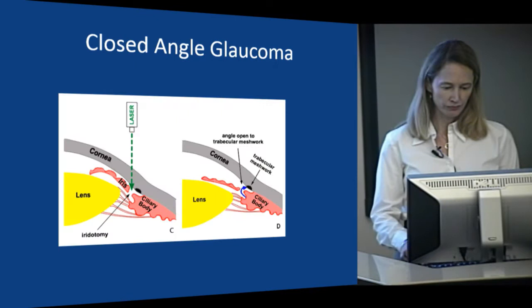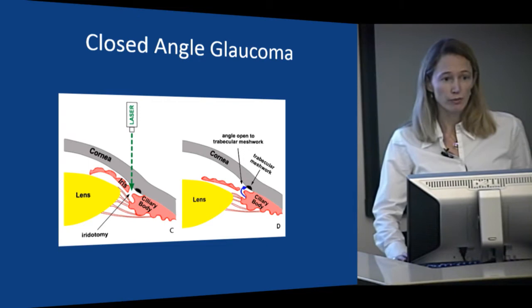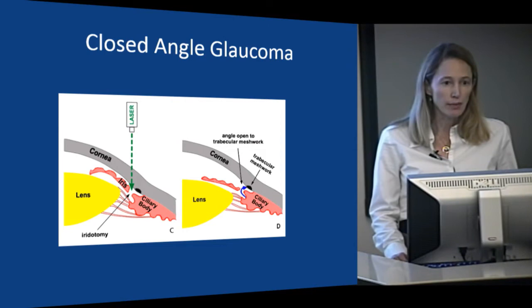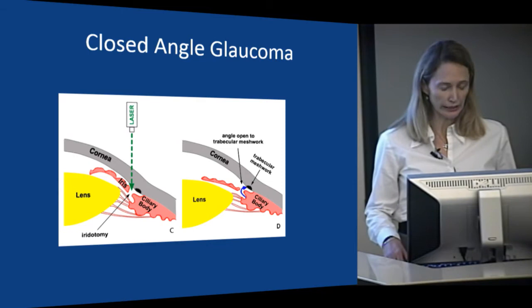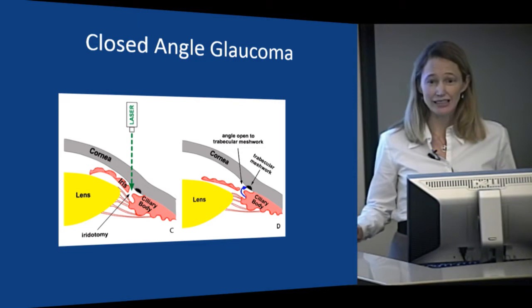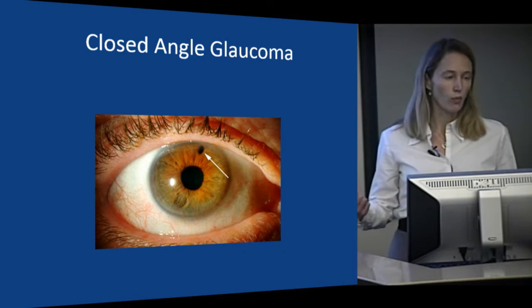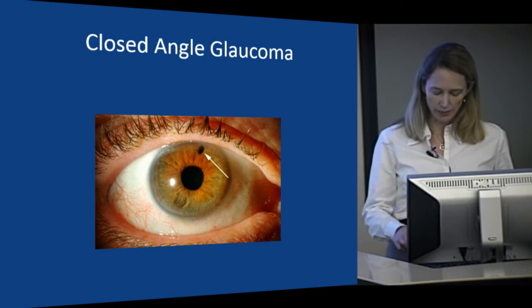Because closed angle glaucoma is more of a mechanical problem, we have more of a mechanical solution. We make a hole in the iris called an iridectomy — surgically or most often now with a laser. That hole allows fluid made by the ciliary body to pass through the opening in the iris to the angle and trabecular meshwork and drain out of the eye. We often do this prophylactically if we think someone is at risk for the disease. This is called a peripheral iridotomy.